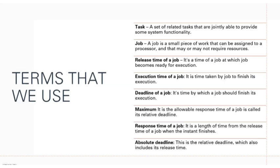We'll soon be uploading a video on the classification and details of process, thread, and all these things, where we will discuss more about the process, deadline, and everything. The terms you should at least know are: task, job, release time, deadline, absolute deadline, maximum deadline, execution time, and response time — which is the time with which you will get a desired response.